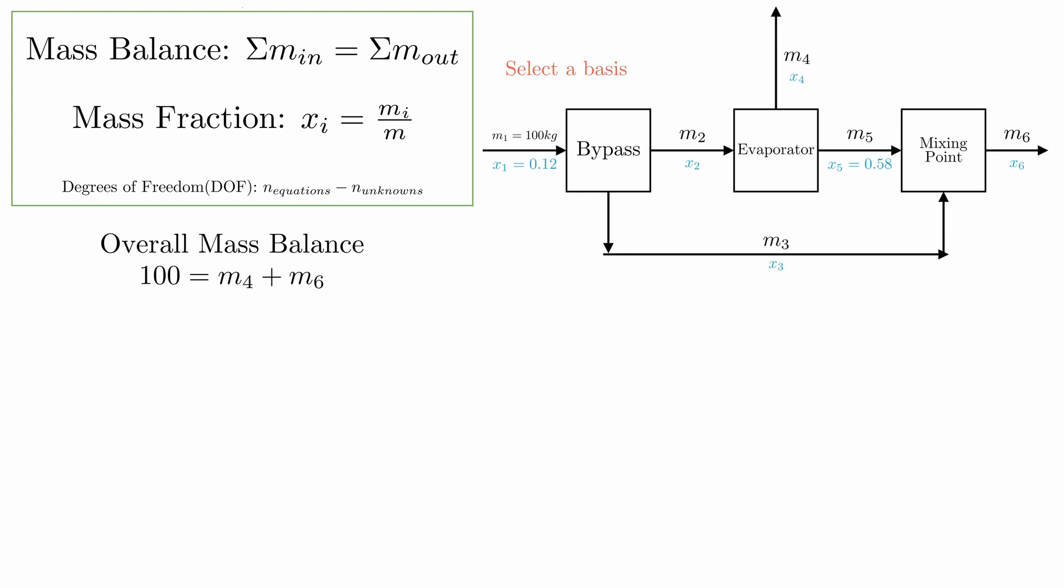Now using the mass fraction, we can write a similar equation for the overall solids balance. But look at stream 4. We can assume that it's pure evaporated water, such that x4 is actually 0. Which means we have 0 degrees of freedom. So solve for this algebraically by yourself.